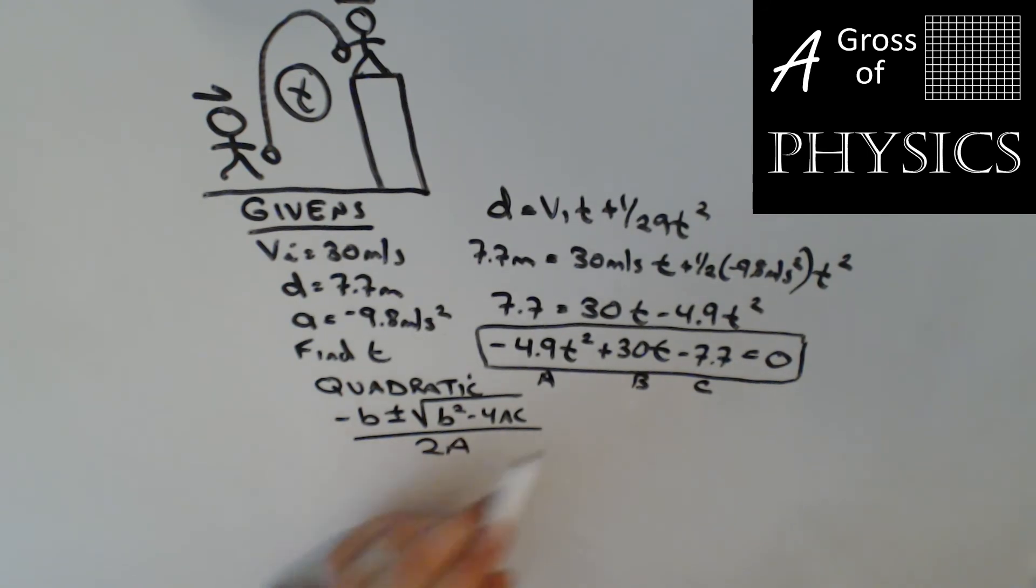At this point, you should recall that each of these terms is a, b, or c, and we can plug them into this equation. Now you can do it this way using the equation, we can use an online quadratic solver, or you could even use a graph and try to find the roots of the graph where they intersect the x-axis.